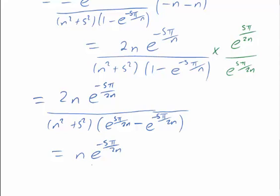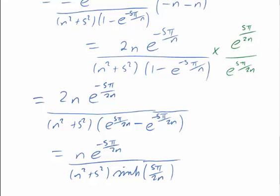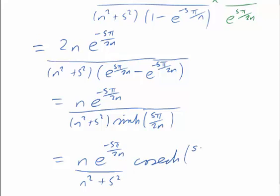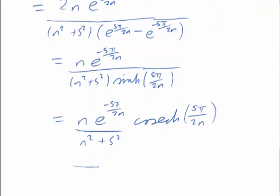And now with the 2 on top and the combination of exponentials underneath, that's the same as n e to the minus s π over 2n over n squared plus s squared times the hyperbolic sine of s π over 2n. And if you like a sinh underneath there's a cosech on top, so that's e to the minus s π over 2n. And that concludes the derivation. Thank you.